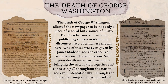The Death of George Washington. The death of George Washington allowed the newspaper to be not only a place of scandal, but a source of unity. The press became a newswire, publishing various orations and discourses, two of which are shown here. One of these was given by James Madison, and the other is an international French oration. Such press details were instrumental in bringing the new nation together and connecting all throughout the nation, and even internationally, through the despair of losing their first president.